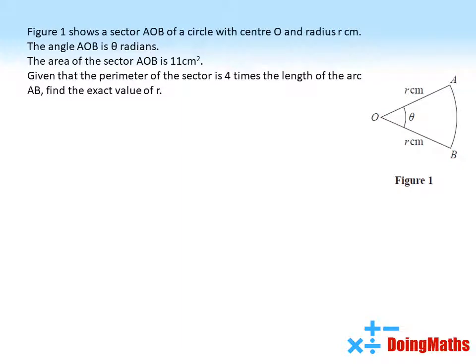Figure 1 shows a sector AOB of a circle with centre O and radius R centimeters. The angle AOB is theta radians. The area of the sector AOB is 11 square centimeters. Given that the perimeter of the sector is 4 times the length of the arc AB, find the exact value of R.